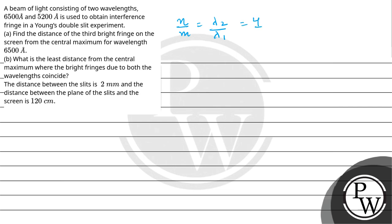For the minimum value, this means the 4th fringe for wavelength lambda 1 will coincide with the 5th fringe of wavelength lambda 2. So we need to find the minimum distance from central maximum.